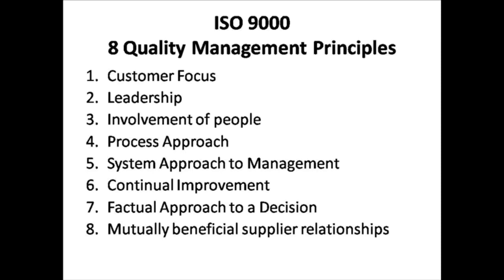The eight quality management principles as per ISO 9000 are as follows — this is a very important eight-mark question. 1. Customer Focus. 2. Leadership. 3. Involvement of People. 4. Process Approach. 5. System Approach to Management. 6. Continual Improvement. 7. Factual Approach. 8. Mutually Beneficial Supplier Relationships.